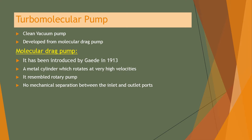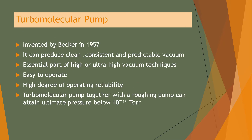The molecular drag pump was introduced by Gaede in 1913. It featured a metal cylinder which rotates at very high velocities and resembled a rotary pump, with no mechanical separation between the inlet and outlet ports. The turbo molecular pump was invented by Becker in 1957.